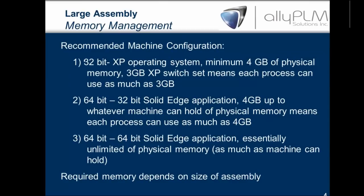Sometimes we're stuck with what we have. If you're using a 32-bit operating system, get a minimum of 4GB of RAM and set your 3GB switch — I'll explain why and show you how to do that in a minute. Your required memory depends on the size and complexity of your assembly, so you have to judge for yourself what you need.